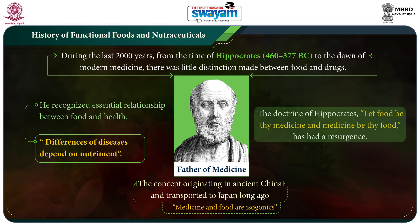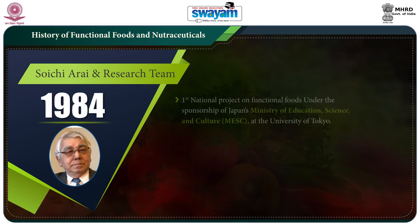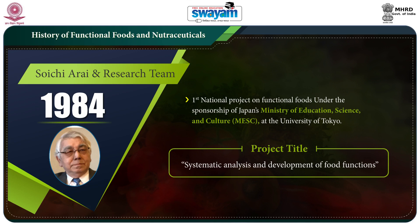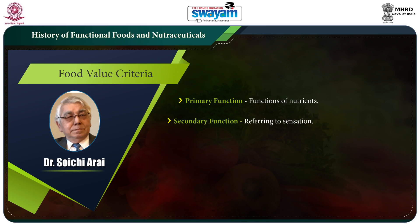Similarly, the doctrine of Hippocrates — 'let food be thy medicine and medicine be thy food' — has had a rebirth. In 1984, the first national project on functional food was initiated by a research team headed by Professor Soichi Arai at the University of Tokyo. The project, entitled 'Systematic Analysis and Development of Food Functions,' was sponsored by Japan's Ministry of Education, Science and Culture (MESC). The food value criteria were defined by three categories: primary function (functions of nutrients), secondary function (sensation), and tertiary function (body-modulating function of non-nutrients).